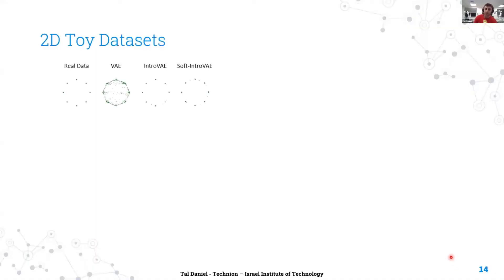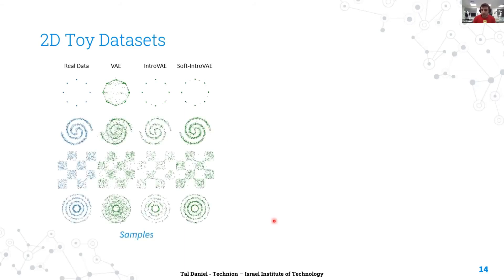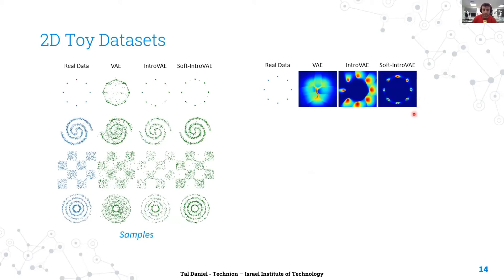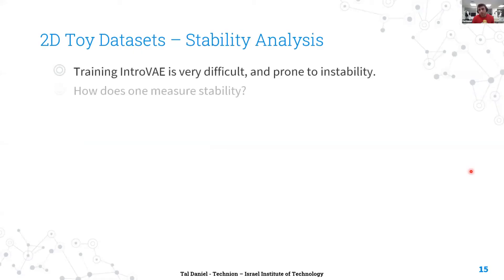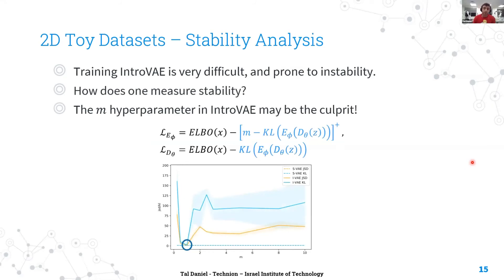First, we want to understand what kind of distribution our model learns, so we looked at 2D data, which is easy to visualize. We can see that the introspective models generate much fewer out-of-distribution samples, and Soft Intro VAE learns distributions with sharper supports, illustrating the effect of entropy regularization. We also verified results quantitatively with three metrics to evaluate inference and sampling — Soft Intro VAE outperforms Intro VAE both quantitatively and qualitatively, and both are superior to the standard VAE. We also investigated the source of Intro VAE's instability and found that the M hyperparameter is highly sensitive to its values, and even small deviations led to divergence. Soft Intro VAE does not require this hyperparameter.